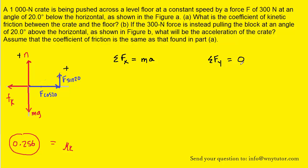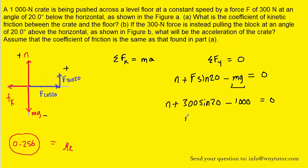We'll proceed with Newton's second law in the x and y directions. In the y direction the sum of the forces still equals zero because the crate is not accelerating vertically. However, the crate is accelerating in the x direction, so we must keep the ma term there. For the y direction: the normal force and F sine 20 both point upward and are positive, while mg points downward and is negative. With mg equal to 1,000, solving gives a normal force of approximately 897 newtons.